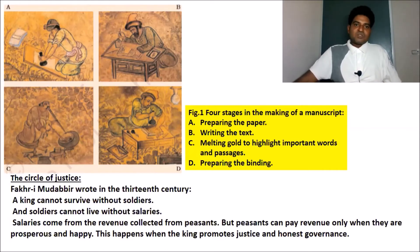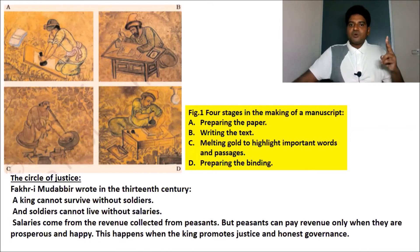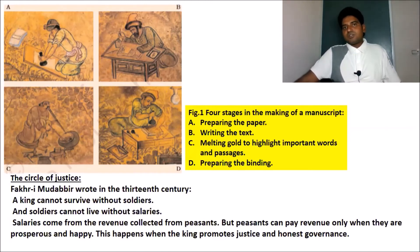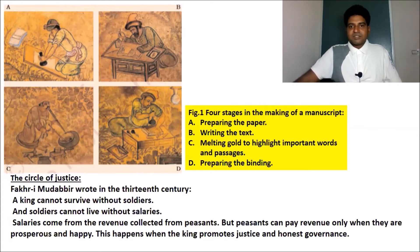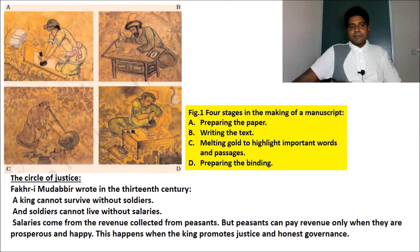The fourth stage is binding the manuscript so that it can be preserved carefully. So in summary, the four stages are: stage one — preparation of the paper; stage two — writing the text; stage three — melting gold to highlight the important words and passages; and stage four — the binding process. This is how manuscripts were prepared.